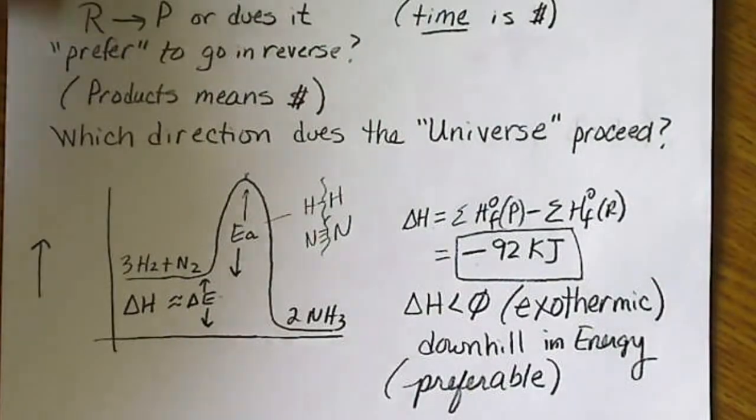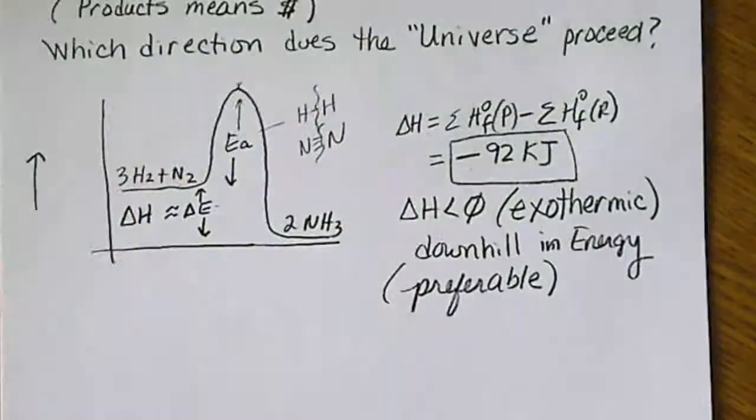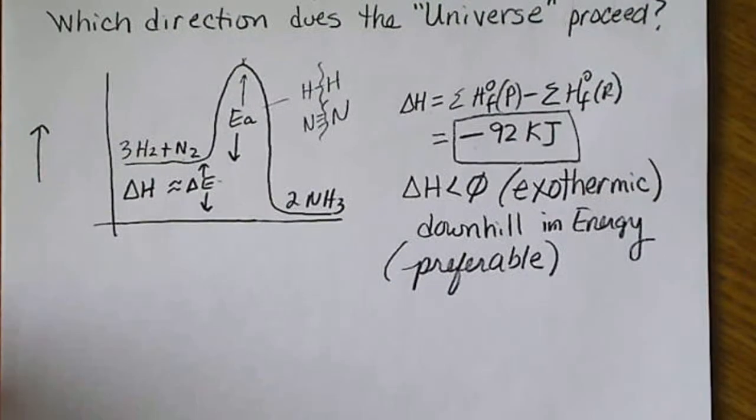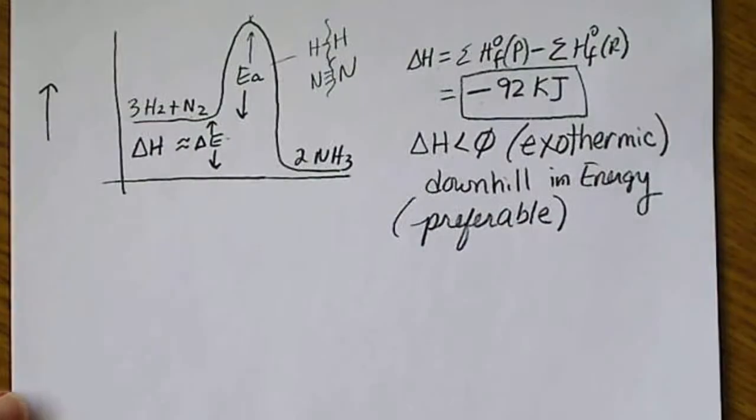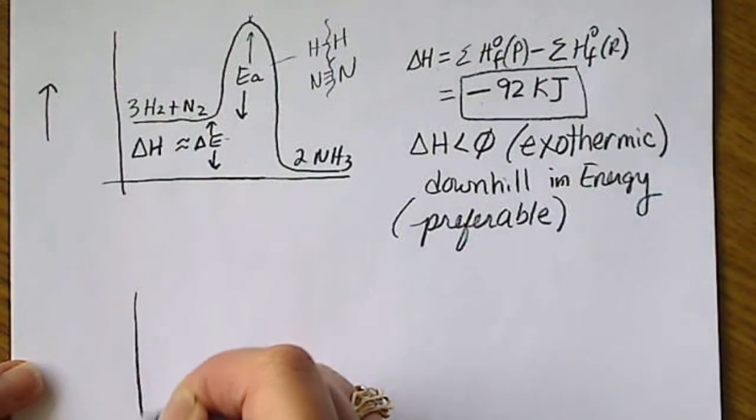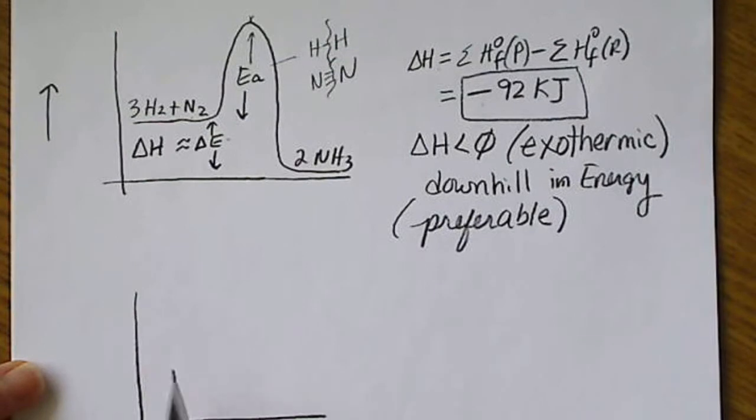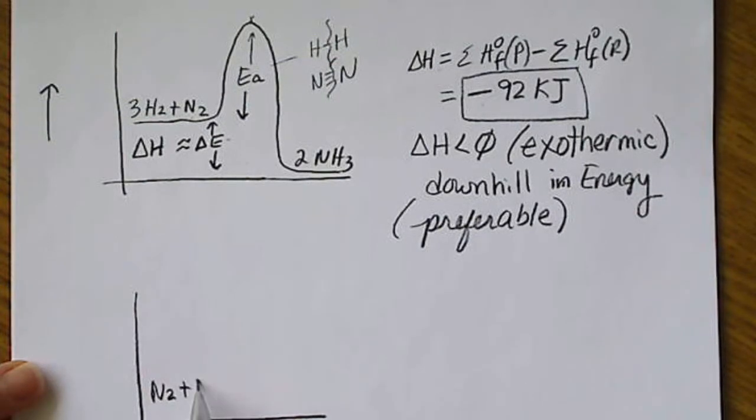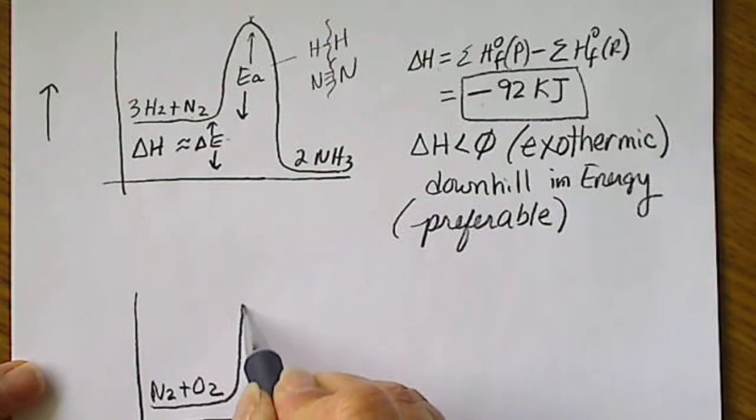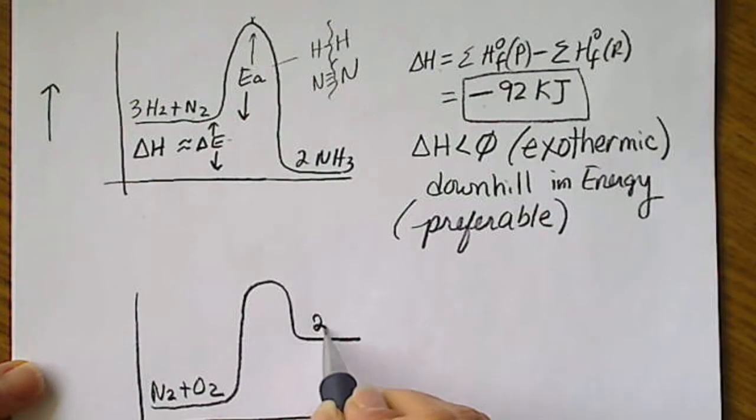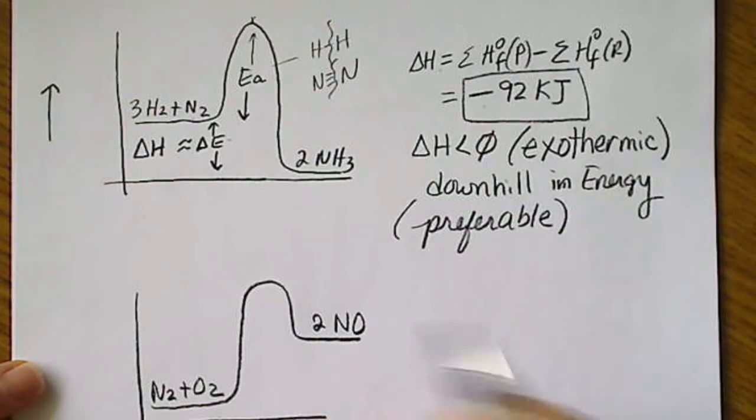An endothermic reaction would actually absorb heat. So we have a simple, kind of like this one, we have N2 plus O2, those are our reactants, and we end up making two nitric oxides.